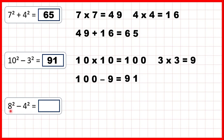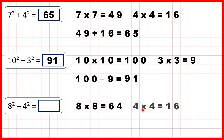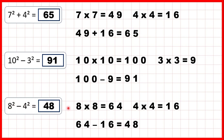Now we have eight squared, so eight times eight which is sixty-four. And we need to subtract four squared, which is four times four, so sixteen. Sixty-four minus sixteen is forty-eight. So eight squared minus four squared is forty-eight.